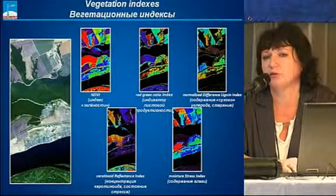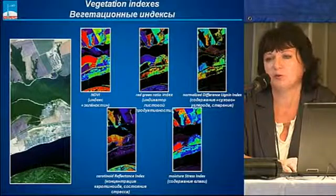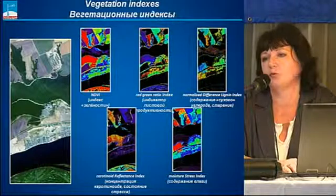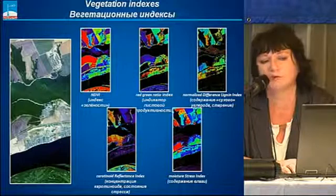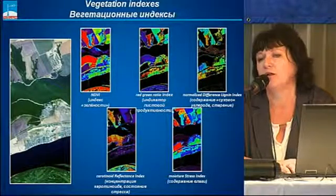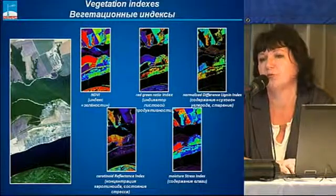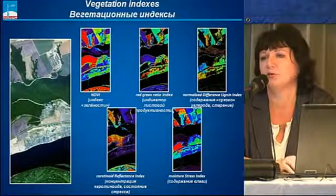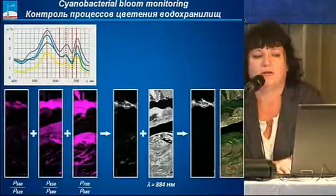I will now show an example using different methods on the same image. First, we build indexed images. This is the NDVI index, one of the simplest ones that you can also apply to multi-spectrum. The other four indices shown are built taking into account preset wavelengths and incorporate specific signs of vegetation that biologists are knowledgeable about.